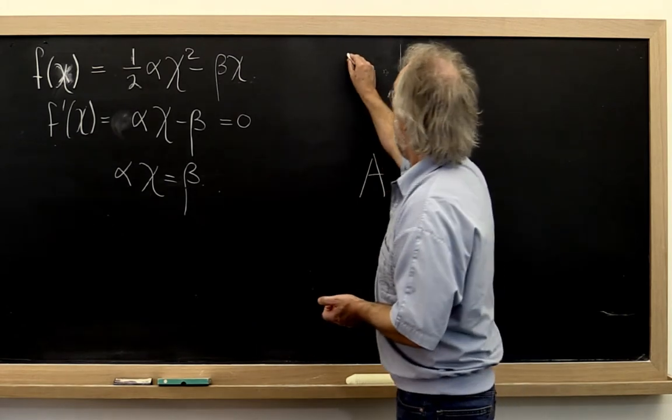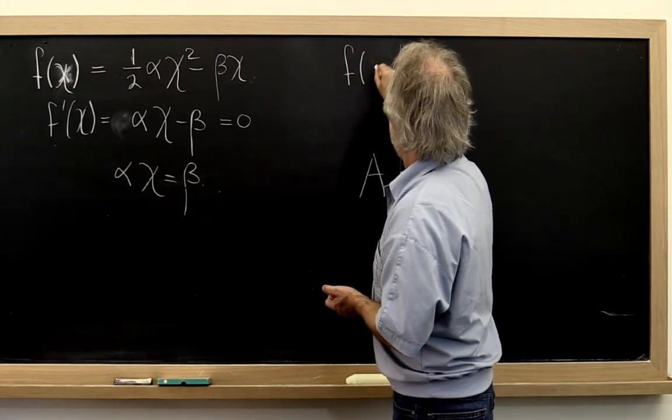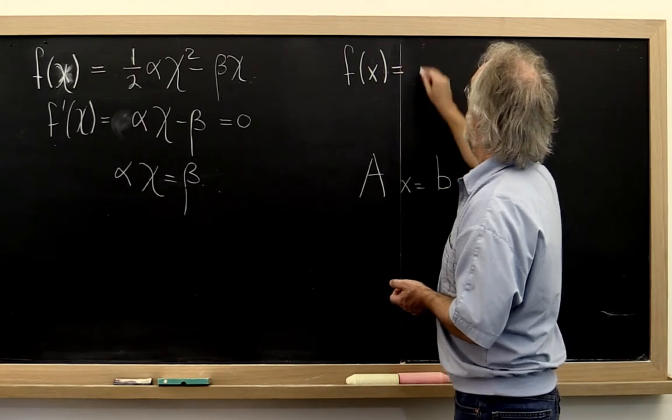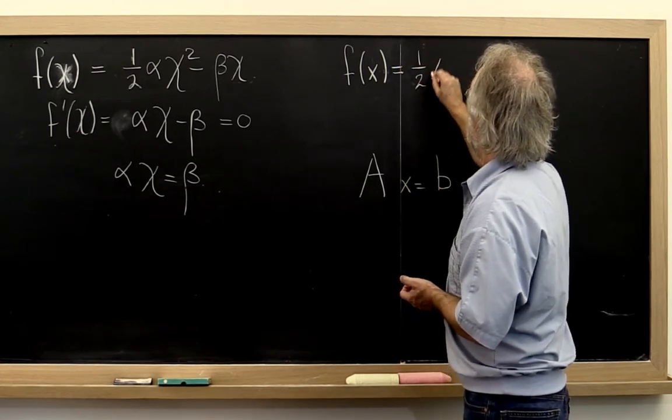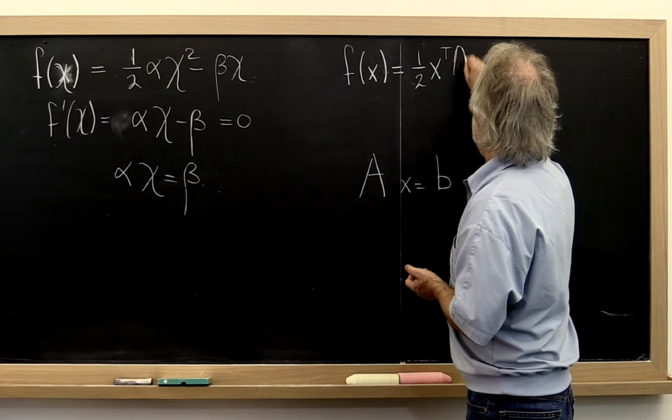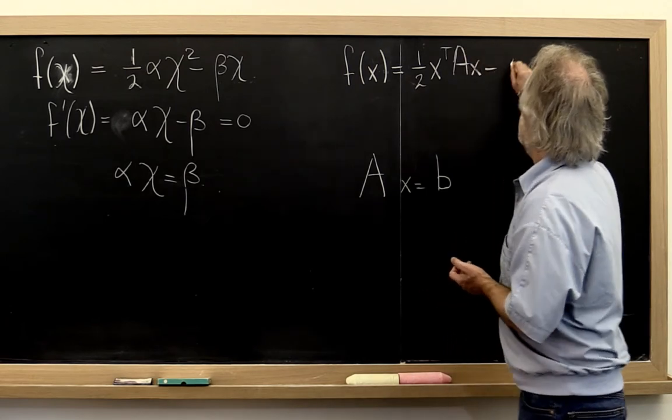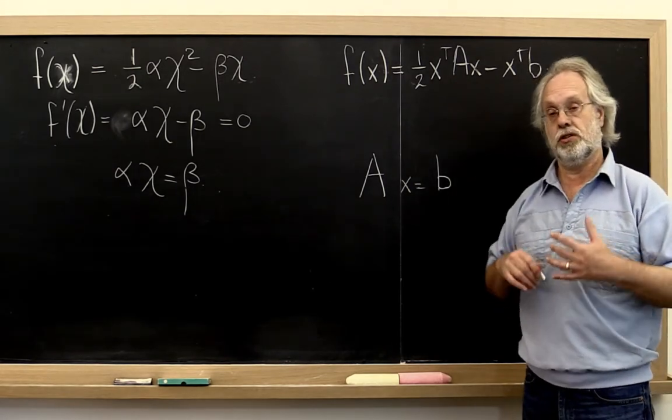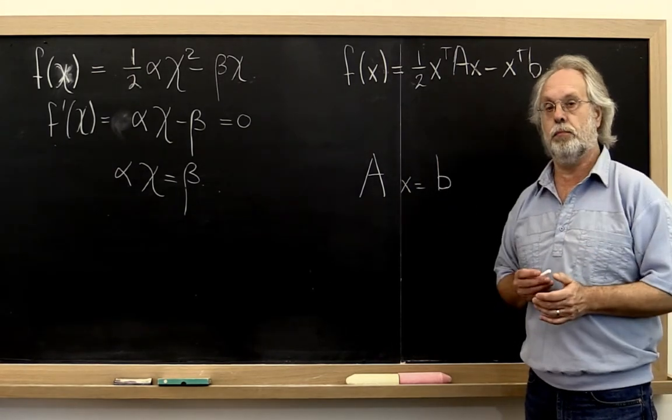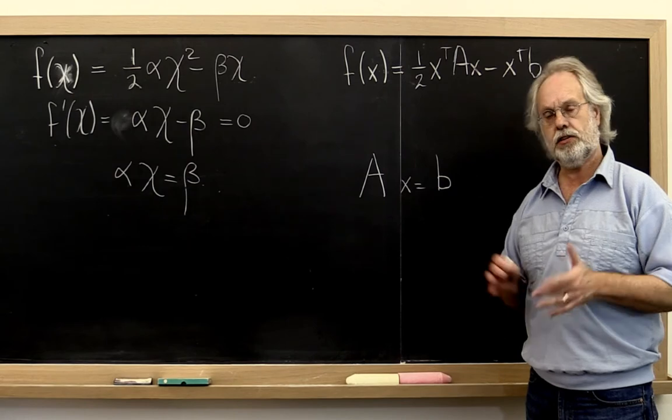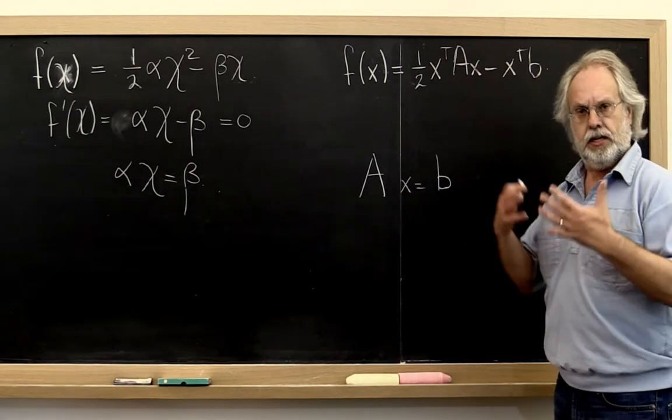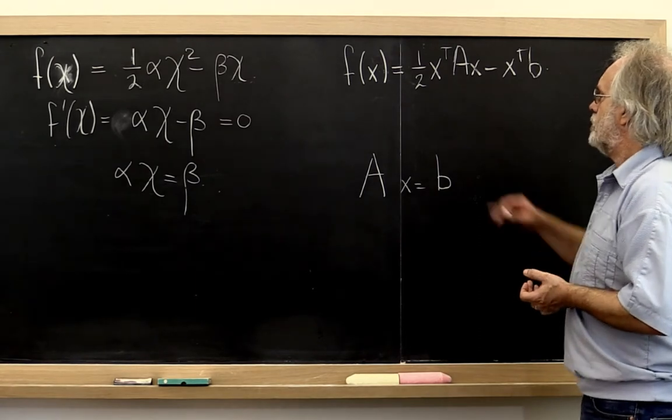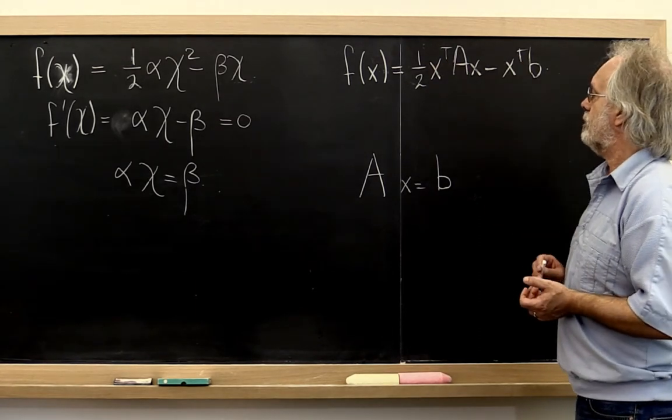Now if we create the function f of x is equal to 1 half times x transpose A x minus x transpose B, where another thing we're going to do this week is we're just going to forget about complex values, matrices, and vectors, and let's just examine the case where everything is real. So now we can just use transpose instead of Hermitian transpose.